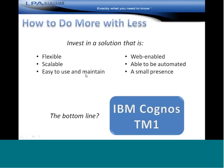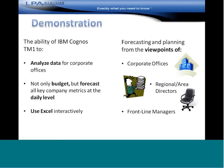So how do you do more with less? Many people are investing in a solution that's very flexible and scalable as their company grows. It's got to be easy to use and maintain. And this is 2013, so it has to be able to be used on the web. Automation is a huge plus. The bottom line: many companies today are using IBM Cognos TM1. We'll jump right into the demonstration — showing the ability to analyze data for corporate offices, not only for budgeting but also forecasting, getting right down to the nitty-gritty of all those key company metrics at the daily level. You'll be able to use Excel interactively, doing this forecasting and planning from a variety of different viewpoints, including the corporate office, regional and area directors, and the front line managers.